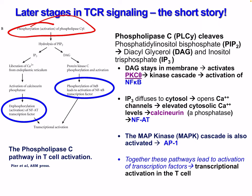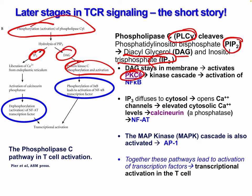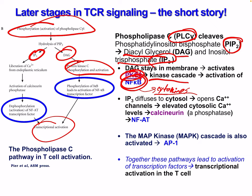Phospholipase C gamma (PLC-gamma) cleaves phosphatidylinositol bisphosphate (PIP2) into diacylglycerol (DAG) and inositol triphosphate (IP3). Diacylglycerol stays in the membrane and activates protein kinase C theta (PKC-theta). This results in a kinase cascade and activation of NF-κB. This transcription factor results in several cytokines and was also seen in innate immunity through a similar pathway.